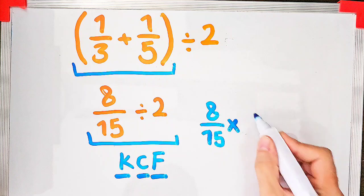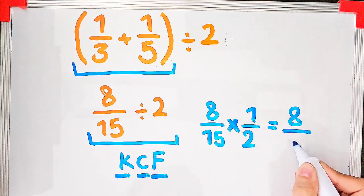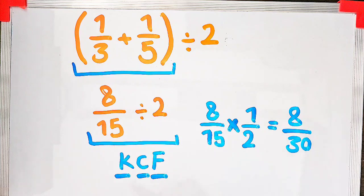After that, we change the division sign to the multiplication sign, and after that we flip the second number.